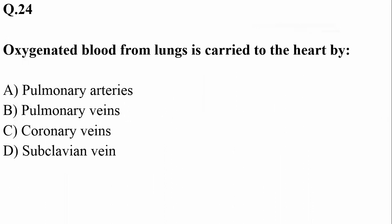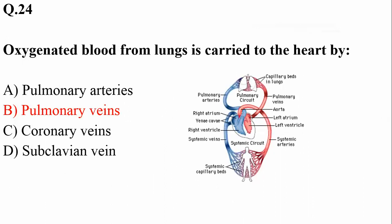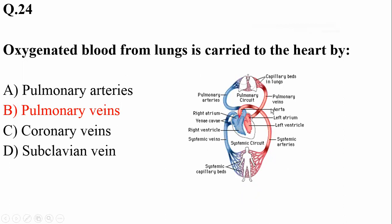Question twenty-three: oxygenated blood from the lungs is carried to the heart by pulmonary veins, while pulmonary arteries carry deoxygenated blood from the heart towards the lungs.